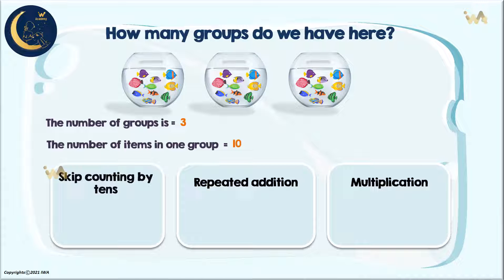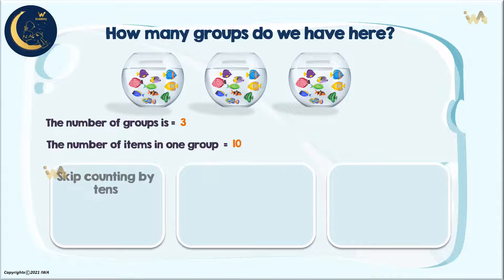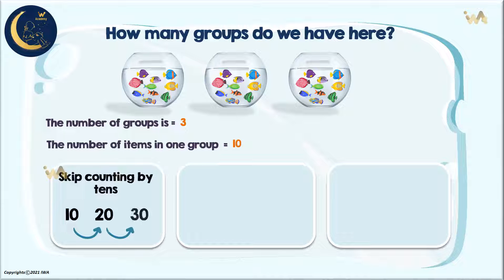Let's start with the first method: skip counting by tens. Ten, twenty, thirty. The last number we got is the number of all the items. So, we have thirty fish.